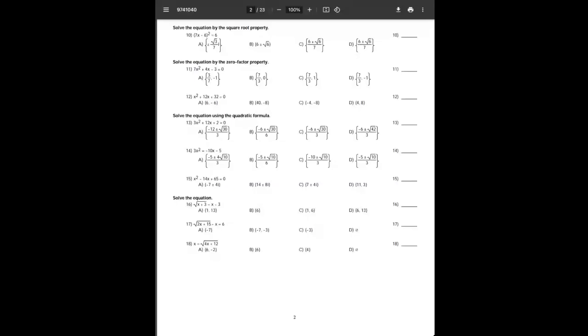All right, this video is going to go over number 10 of the MAC 1105 College Algebra Final Exam Review. The problem says to solve the equation by the square root property, 7x minus 6 squared equals 6.